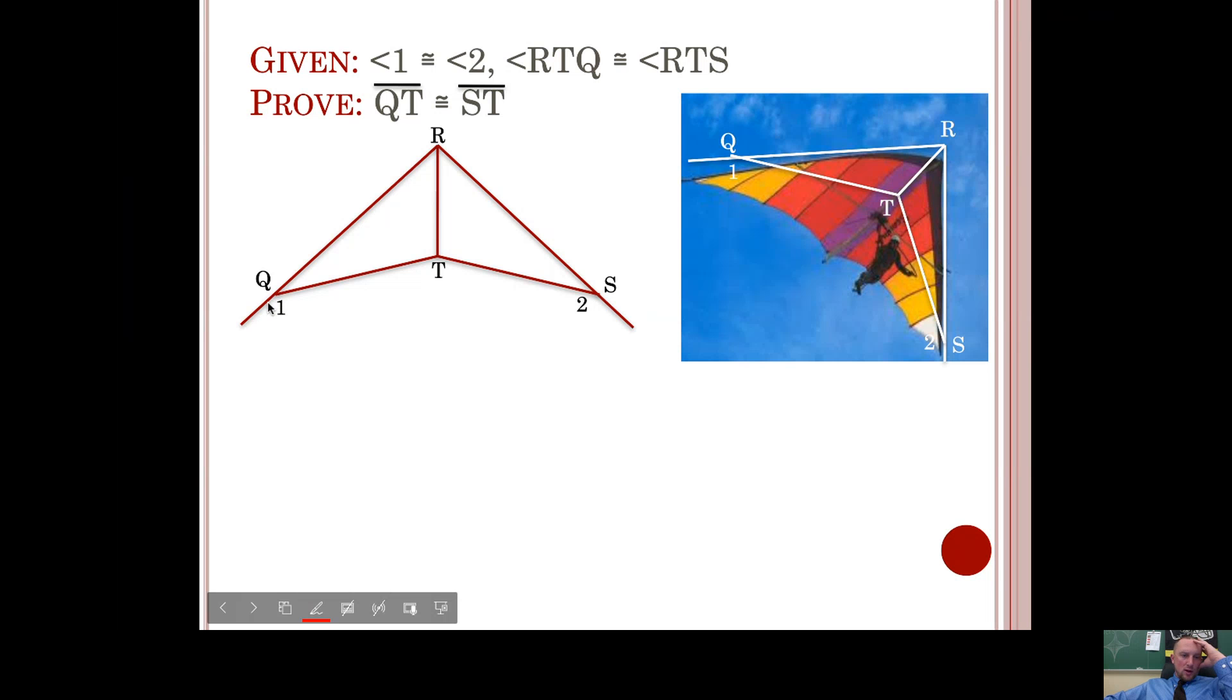We're given that angle 1 is congruent to angle 2. We're also given that angle RTQ, that's this one, is congruent to angle RTS, that's this one. Is this enough to show that the triangles are congruent? Well, we have one pair of congruent angles in the shape. We also have a pair of congruent sides we can mark from the reflexive property.